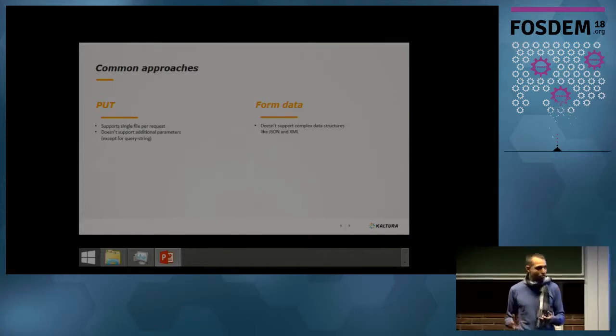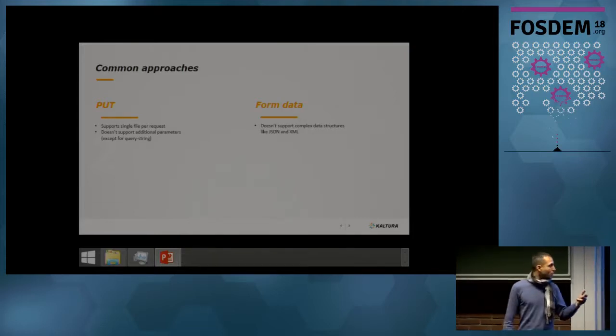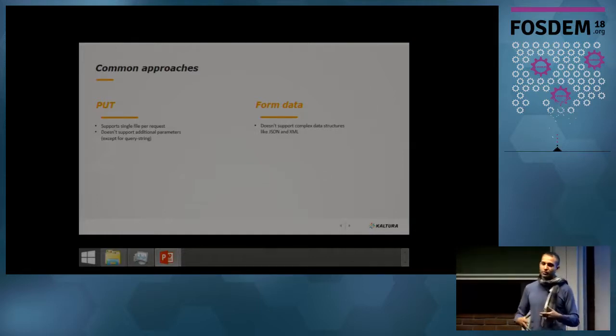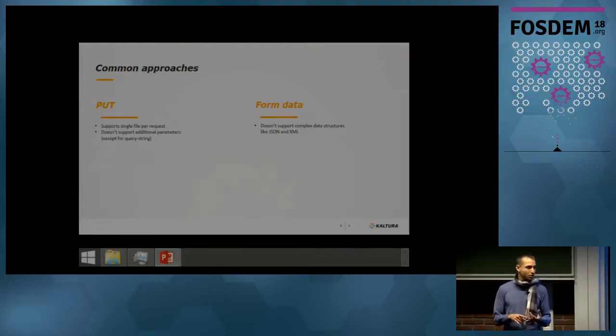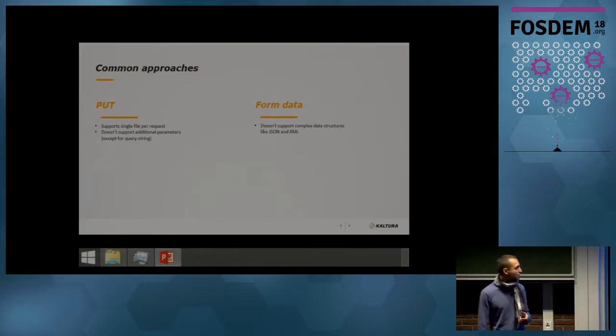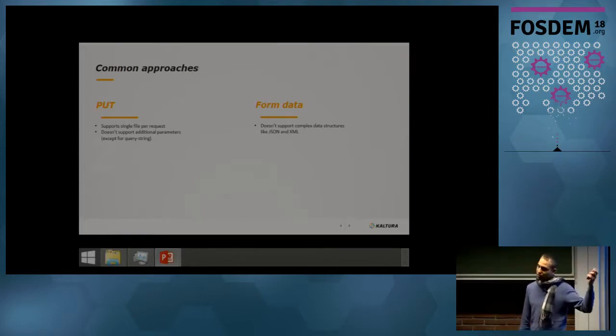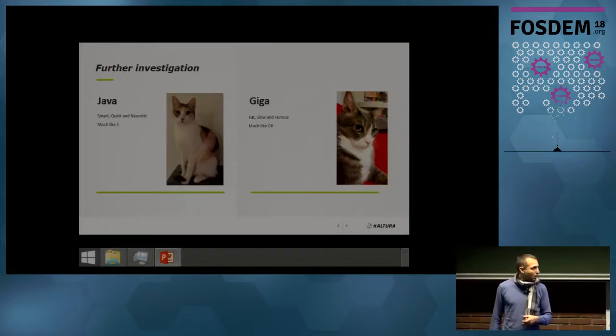Of course, there are simple solutions in the industry. Some providers use PUT to push files to the server. The problem with PUT is that it supports only one single file, and you don't have the ability to add to the request complex data structure. You could use a very complex data structure in the path or in the query string, but it's not designed for that, and it could be very uncomfortable for the developer. Another solution is the form data. The problem here, although it supports multiple files, is that you don't have native support for complex data structure like we do in JSON or XML.